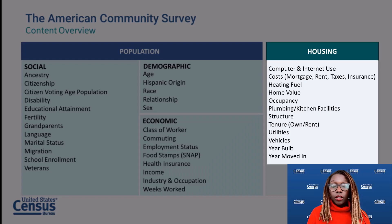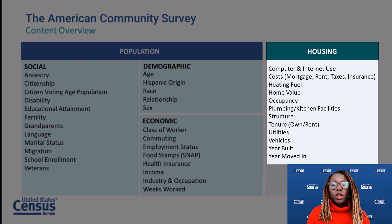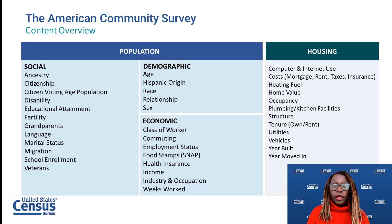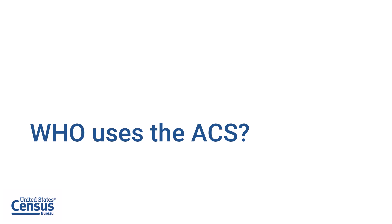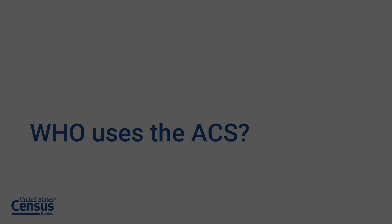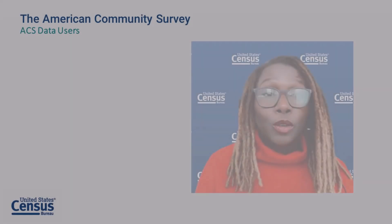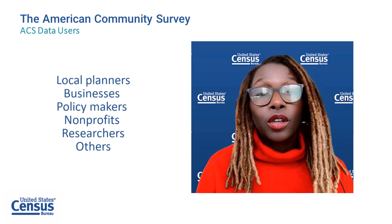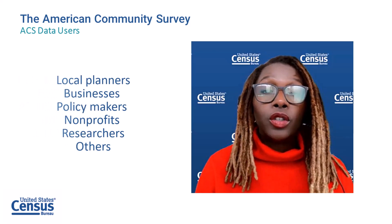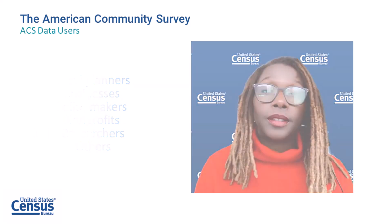And housing characteristics include topics such as computer and internet use, housing costs, and vehicles available. We have a link to resources to learn more about the topics below the video. Who uses the ACS? Local planners, businesses, policy makers, grant writers, researchers, and many more use ACS data.